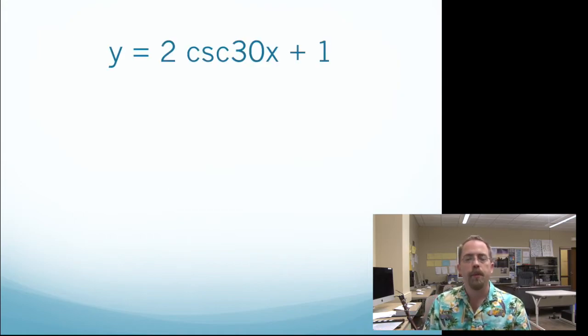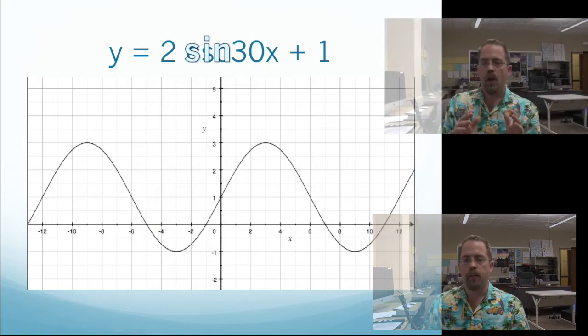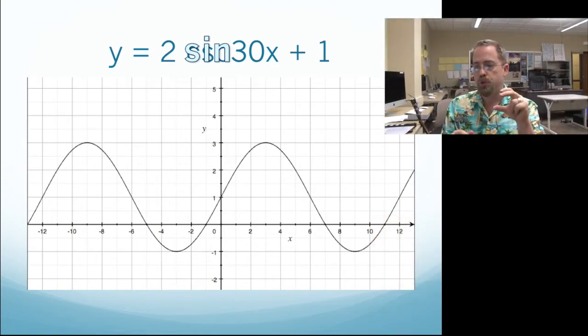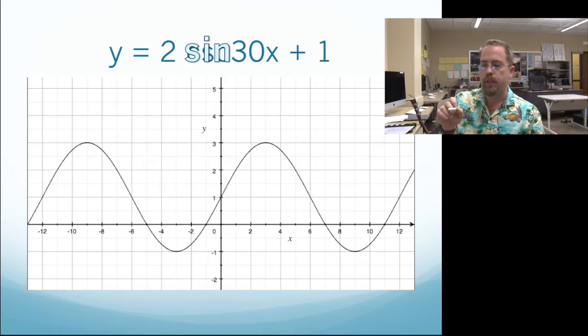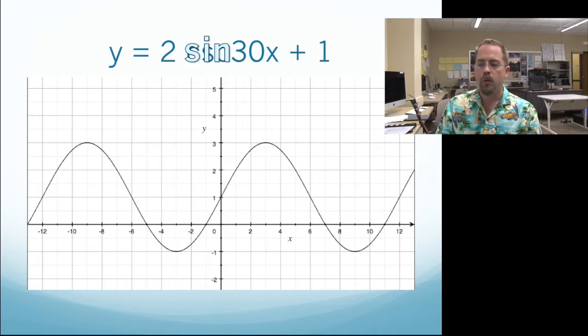So, if you see that you've got a problem that you need to be able to graph 2 cosecant 30x plus 1, the first thing you're going to do is you're going to say, let me just draw the graph as if it was sine, and then that will help me find the reciprocal of it. So, the graph of 2 sine 30x plus 1 is going to look like that. Here, in order to graph this, we've seen that the amplitude is 2, the axis has been shifted up to 1, and the period has been divided by 30. So, our usual period of 360 has been divided into 30 smaller pieces, so the period is just 12.